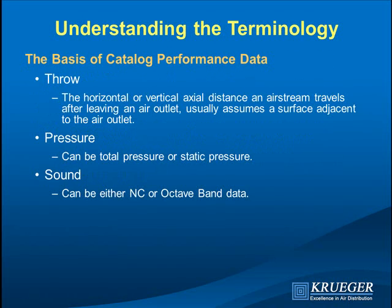When we put data in the catalog, we talk about three main things. Throw is the distance the air travels along, typically along a surface — there are exceptions. Pressure: we talk about total and static in the catalog, and you can calculate velocity pressure very easily. And sound: Kruger is the only company that lists octave band data for every diffuser, and we also calculate NC.